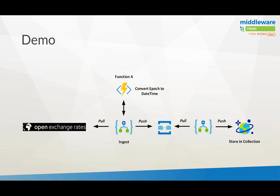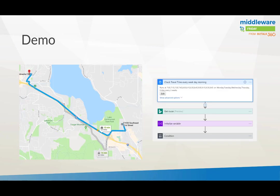I have prepared two demos. The first is an older demo where I get exchange rates — dollar versus all other world currencies — pulling that data based on a recurrence trigger, calling a function to convert epoch to datetime, pushing it to a queue, then another Logic App listens and pushes it into Cosmos DB. The second demo triggers at a certain time of day to get the route between address A and B and checks whether the travel time is longer or shorter based on traffic congestion.